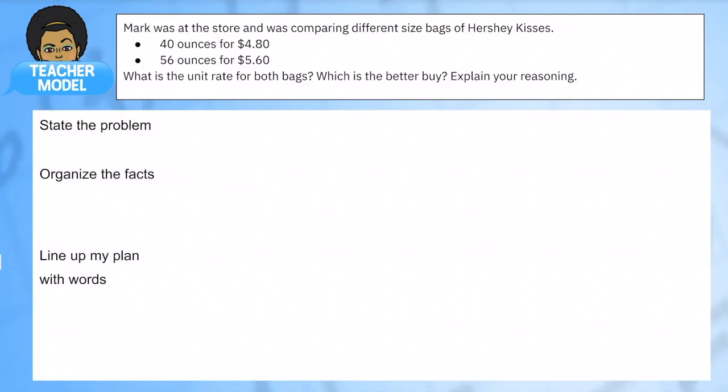Let's go through this first problem. I guarantee this is a skill you can use when you go out shopping with your family. Mark was at the store and was comparing different size bags of Hershey Kisses. There's a 40 ounce bag for $4.80 and there's a 56 ounce bag for $5.60.